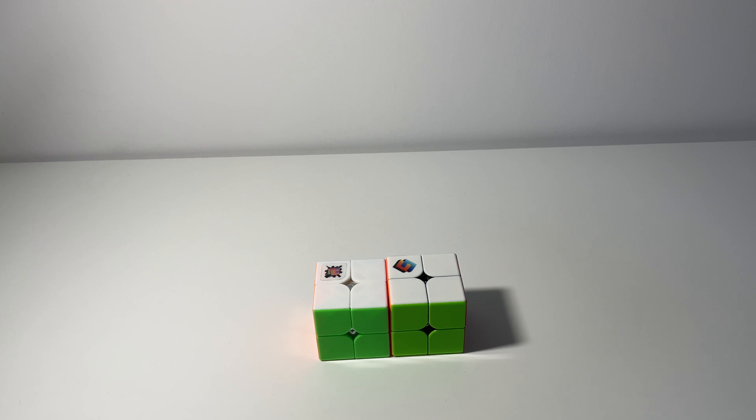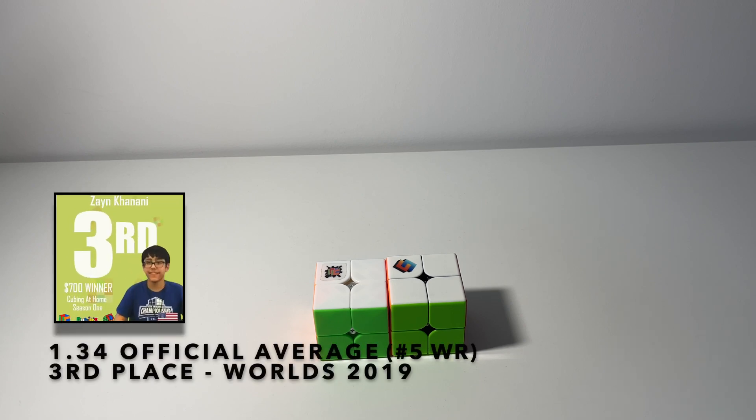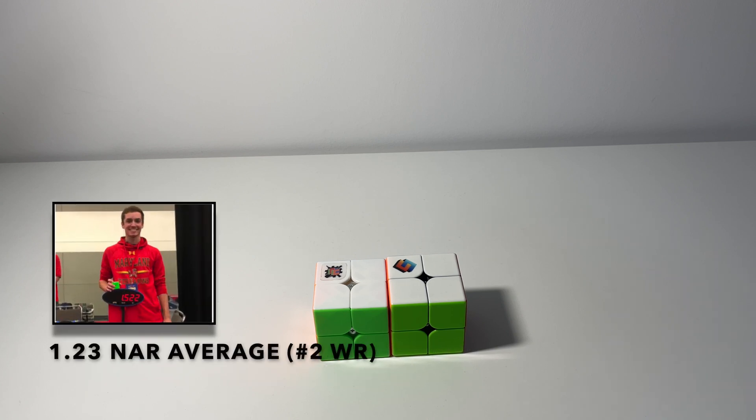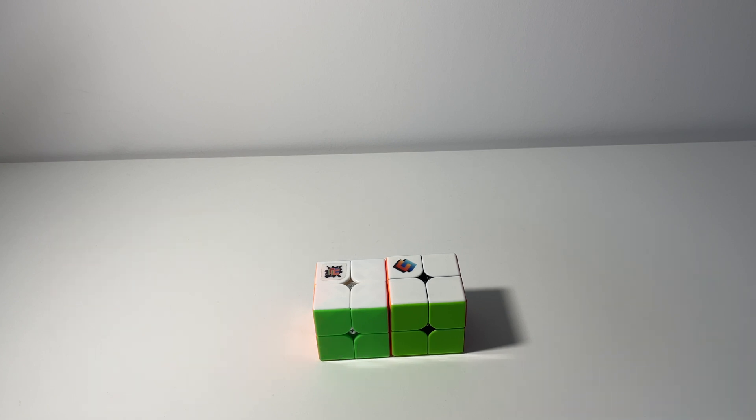They are both sub 1.5 globally on 2x2. Zayn has a 1.3 second official average and came 3rd at the world championships in 2019 in 2x2. Will Callen has a 1.23 NAR average and is the reigning US national champion. Both of these guys are very experienced and I'm honored to feature them on my channel.